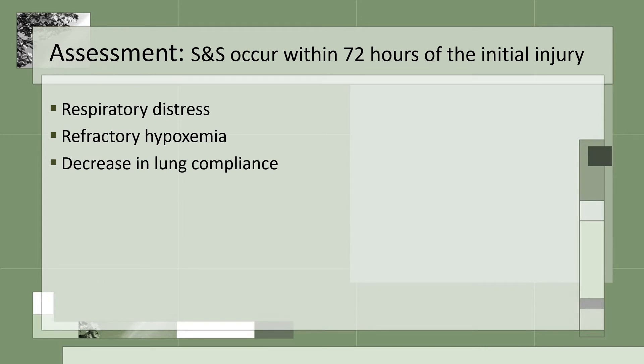The signs and symptoms of ARDS usually occur within the first 72 hours of the initial injury. Respiratory distress is displayed as tachypnea, dyspnea, and tachycardia. There is refractory hypoxemia from shunting, and a decrease in lung compliance — the lungs are stiff and difficult to ventilate. If the patient is on the vent, you will have high pressure alarms because they are unable to have normal tidal volumes.